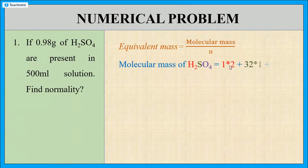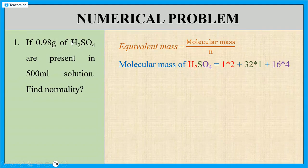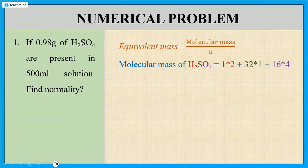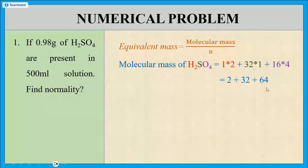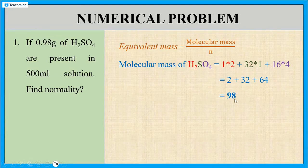First, we calculate the molecular mass of sulphuric acid. The molecular mass equals the atomic mass of hydrogen, which is 1, and there are 2 hydrogen atoms, so it is 1 × 2; plus the atomic mass of sulphur, which is 32, with 1 sulphur atom, so 32 × 1; plus the atomic mass of oxygen, which is 16, with 4 oxygen atoms, so 16 × 4. That gives 2 + 32 + 64 = 98. So the molecular mass of sulphuric acid is 98.